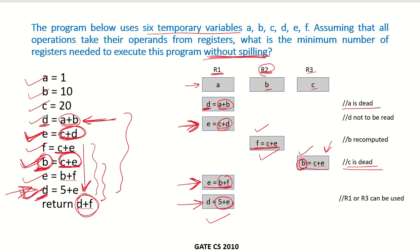So we can see that only by using 3 registers we can execute this program. Only 3 registers will be required to store the operands. Every time we have to check whether a particular variable is dead or not, whether it is not being used in further instructions, or whether a particular variable is being recomputed. These are the things that need to be checked.